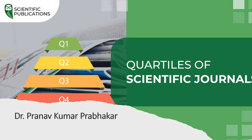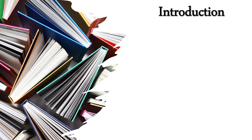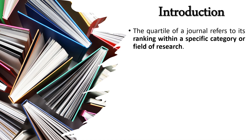Hello friends, welcome to my channel. Today we are going to talk about the quartiles of scientific journals. Many journals use the terms Q1, Q2, Q3, and Q4. Journal quartiles, also called journal quartile scores, are a metric commonly used for ranking of journals within a specific category or field of research.